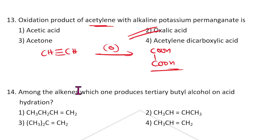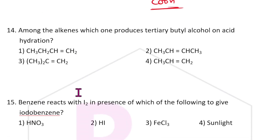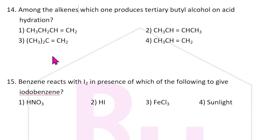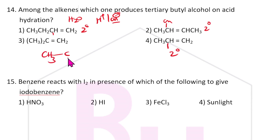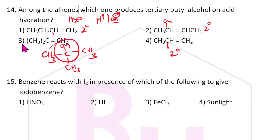Among alkenes, which one produces tertiary butyl alcohol on acid hydration? In acid hydration, H+ and OH- follow Markovnikov's rule — OH attaches to secondary carbon, but for tertiary butyl alcohol we need CH3 groups twice on the same carbon: (CH3)2C=CH2, where OH attaches at the tertiary carbon. Answer is third one.